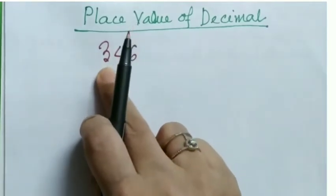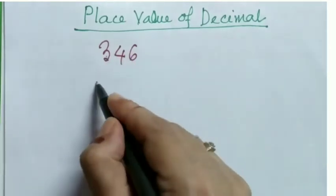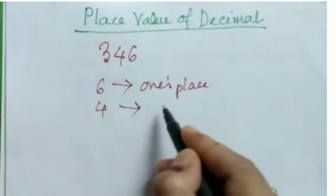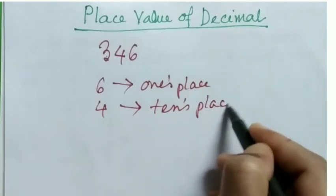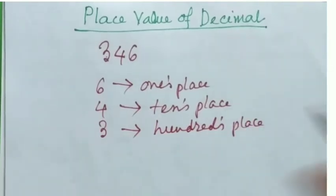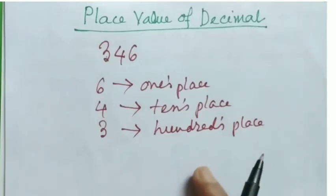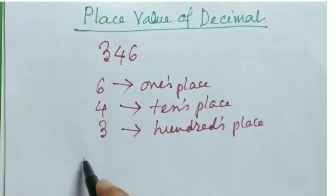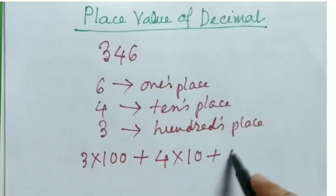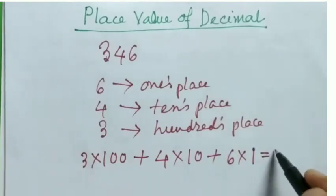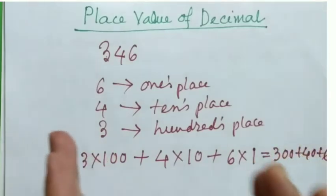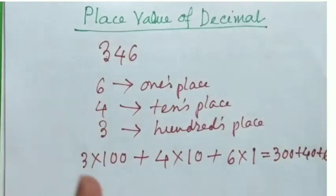Place value depends entirely on where the digit is placed or positioned. Here, 3 is placed in the hundreds place, 4 is in the tens place, and 6 is in the ones place. So in expanded form, we can break this number like: 3 × 100 + 4 × 10 + 6 × 1, which equals 300 + 40 + 6. That's how we understand the number 346.